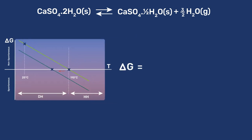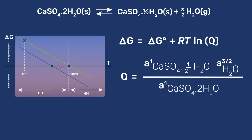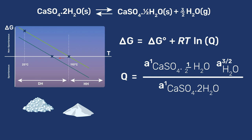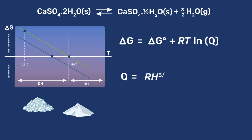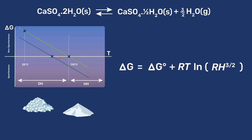Remember that delta G equals delta G0 plus RTLNQ. For the dehydration of gypsum, the expression for Q is the product between the activity of hemihydrate to the power 1, the activity of water to the power 3 halves, divided by the activity of gypsum to the power 1. However, as gypsum and hemihydrate are pure solids, their activities are unity. Moreover, the activity of water in the vapor phase is equivalent to the relative humidity, which leaves us with Q equals RH to the power 3 halves. This is substituted into the Gibbs free energy equation, which is rearranged to get delta G equals delta G0 plus 3 halves RTLNRH.